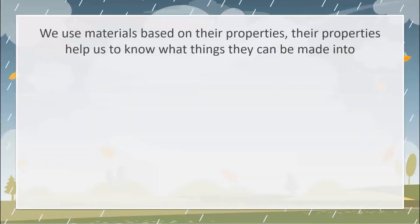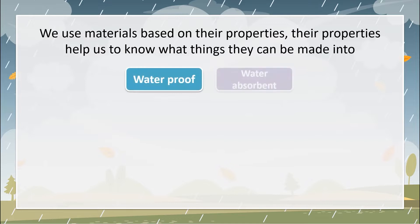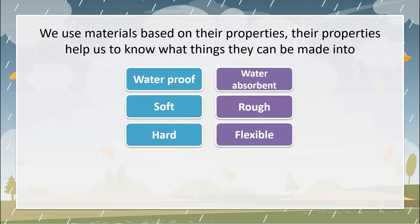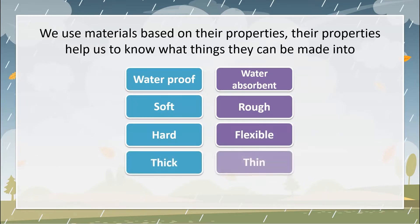We use materials based on their properties. Their properties help us to know what things they can be made into. These properties include: waterproof and water absorbent, soft and rough, hard and flexible, thick and thin, and heavy and light.